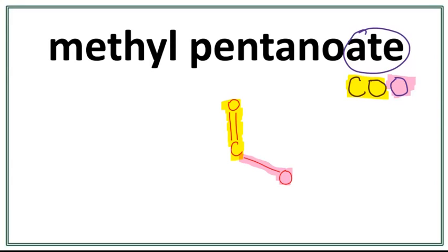Let's work on the parent chain. The parent chain is from the carboxylic acid. This 'pent' right here tells us that there are 5 carbons in the parent chain. The trick to draw this is that you always count till 1 less than the number of carbons you want to draw.